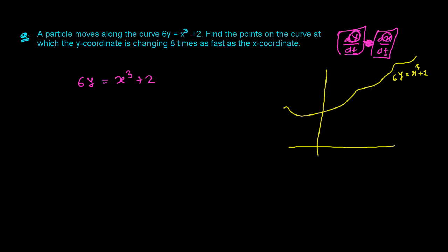There must be some points on this curve where, at that time, the rate of change of the Y coordinate — dy/dt — is 8 times the rate of change of the X coordinate — dx/dt. So what are those points? Maybe one point, maybe more. What are the points where the rate of change of the Y coordinate is 8 times the rate of change of the X coordinate?